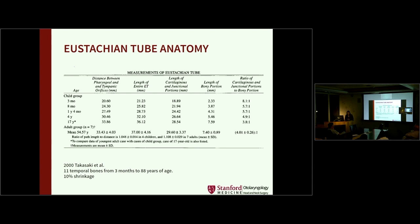When considering cannulating the eustachian tube, we want to know the anatomical range. Adults are roughly in the 31 to 41 mm range, around 37 mm in one particular study. You can see growth from a three-month-old up to a 17-month-old. The narrowest portion we prefer to call the junctional area rather than the isthmus, because it's actually where a valve-like structure controls opening and closing. It sits more medial to the bony area, so cannulating the cartilage and soft tissue could theoretically affect that valve.